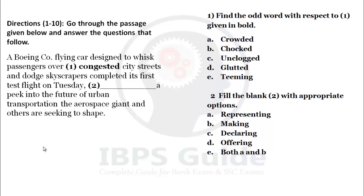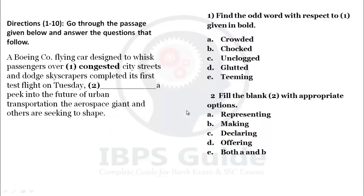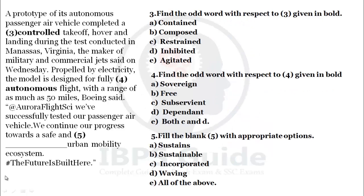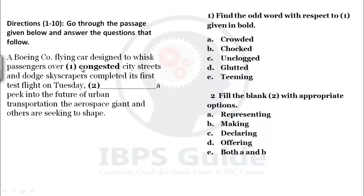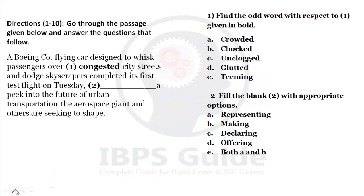Directions one to ten: go through the passage given below and answer the questions that follow. Paragraph: 'A Boeing company flying car designed to whisk passengers over congested city streets and dodge skyscrapers completed its first test flight on Tuesday, then dash a peak into the future of urban transportation.' Here the first bold word is 'congested' and there is a gap marked as the second question.